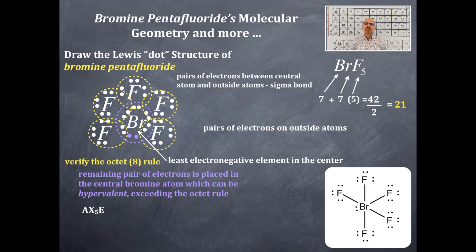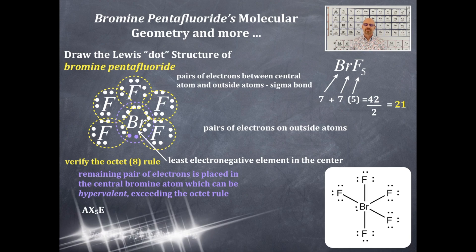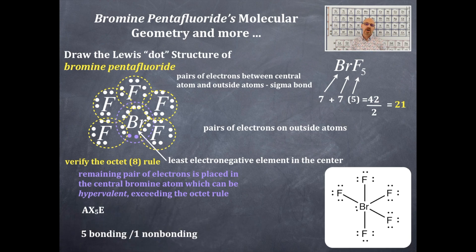How many bonding regions? Five bonding and one non-bonding. From either five bonding and one non-bonding or AX5E, you get the name square pyramidal.